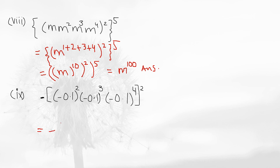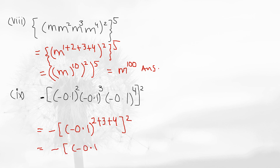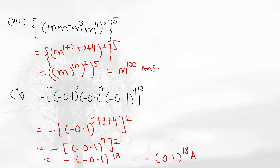In the last question, apply the law of product of powers for (-0.1): add the powers 2 plus 3 plus 4 to get 9, and there is an outer power of 2. Apply law of power of power: 9 times 2 is 18. Since the power 18 is even, the negative sign converts to positive. So the answer is (-0.1) to the power 18, which is positive 0.1 to the power 18.